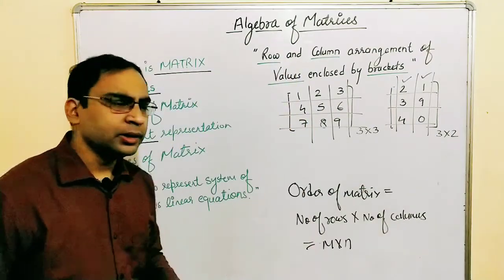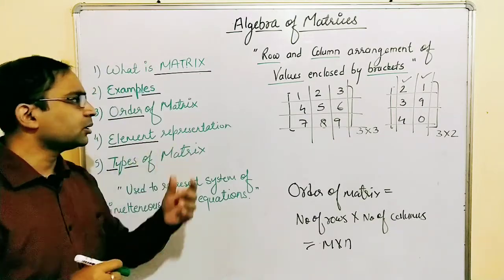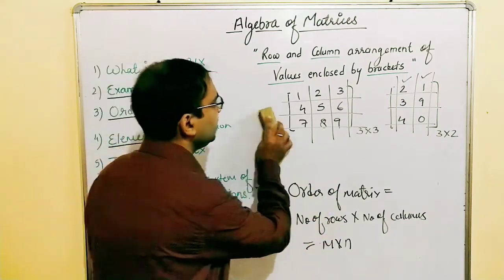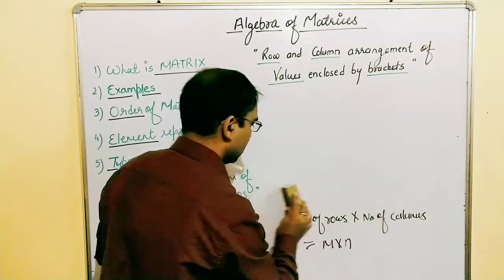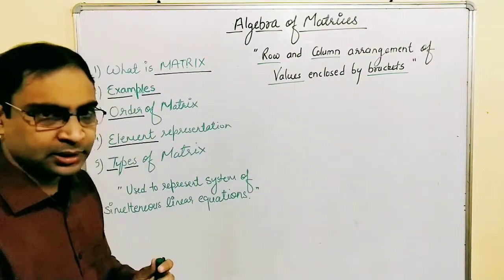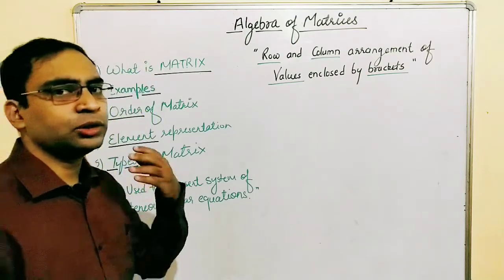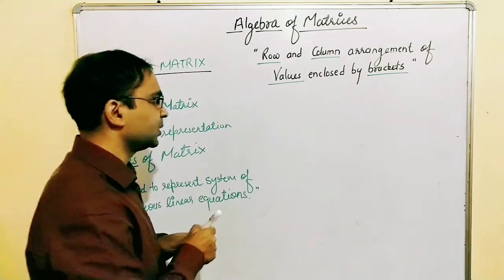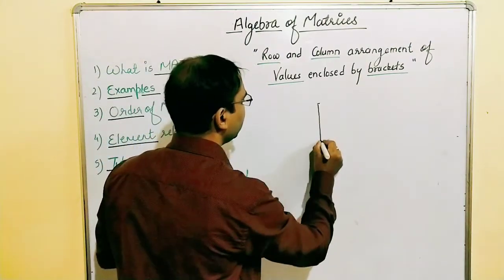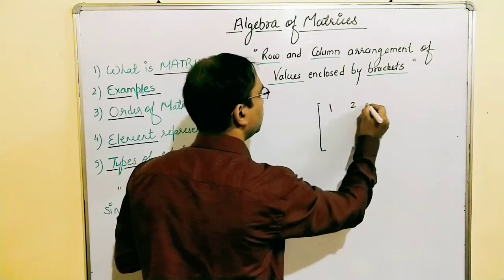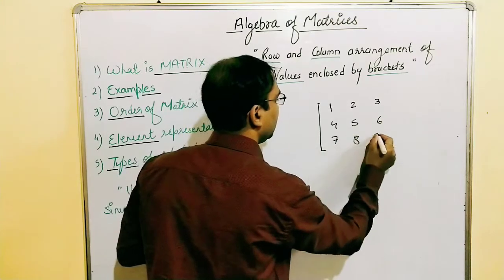Now let's talk about element representation — how we can represent the element of a matrix. Let me take a 3×3 matrix as an example. A 3×3 matrix means a matrix with three rows and three columns. If the matrix is something like: 1, 2, 3; 4, 5, 6; 7, 8, 9 — this is a 3×3 matrix.